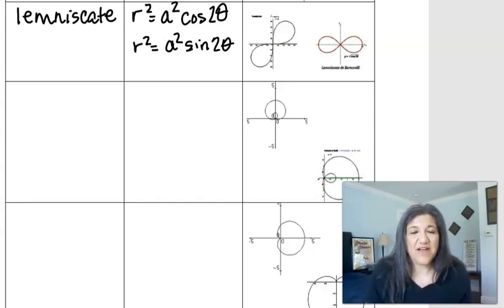And then you also could type in r squared equals a squared times sine 2 theta. Now, you might ask, how do I type this into my calculator to get this kind of curve? And I have better luck with the sine than the cosine. The cosine is going to leave a couple of little gaps.